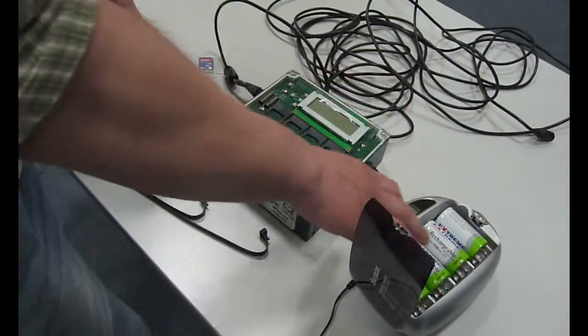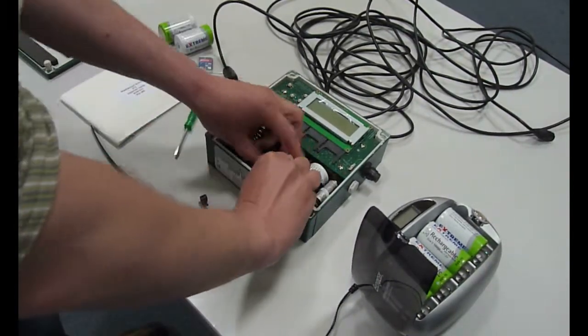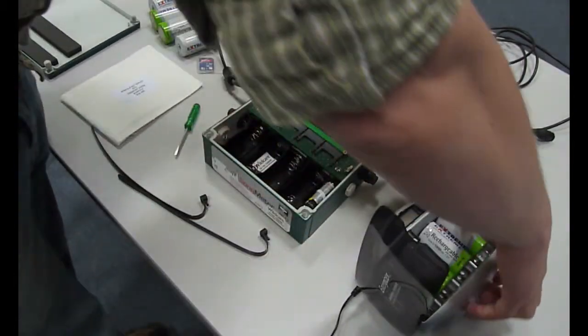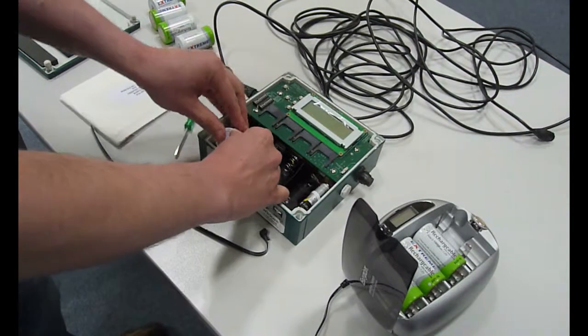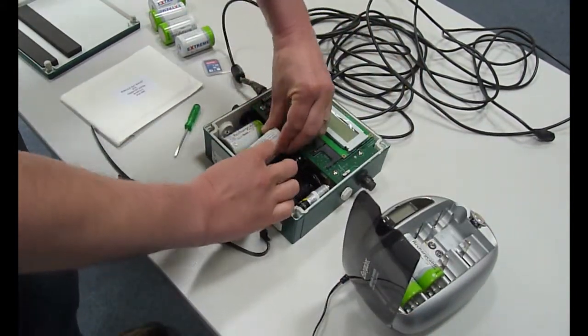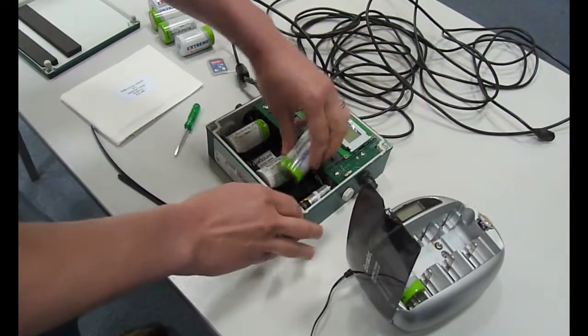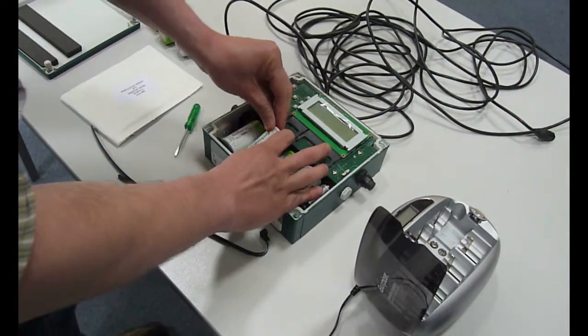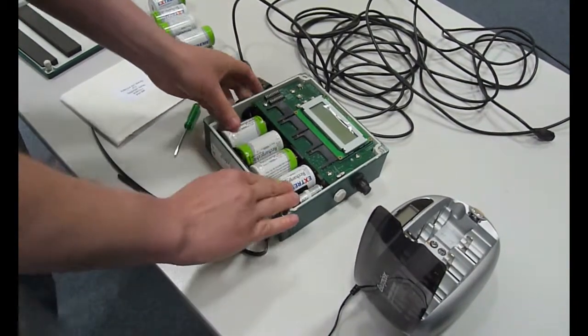The set that's in the charger have been charged by the previous person, so what you need to do is swap over the batteries. You pull out the batteries like this and replace them with the ones which have been on charge by the previous person. Sometimes it can be a bit of a battle to get the batteries in.